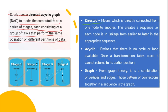Directed means which is directly connected from one node to another. This creates a sequence. Each node is in linkage from earlier to later in the appropriate sequence, so everything is connected. Then acyclic means it's not a cycle.